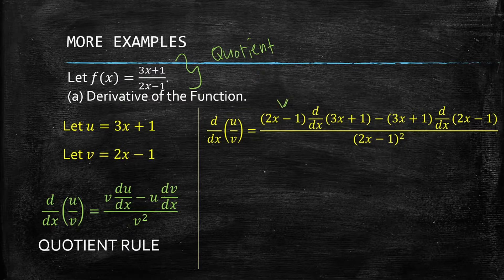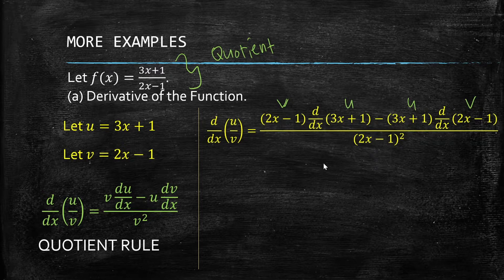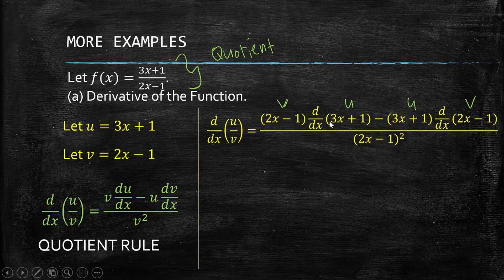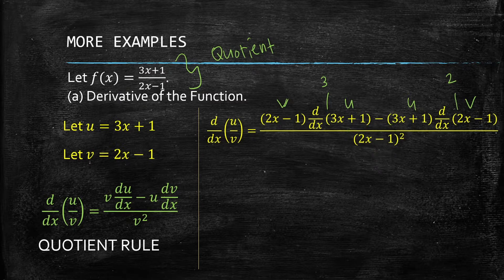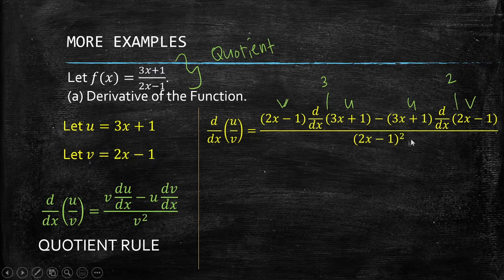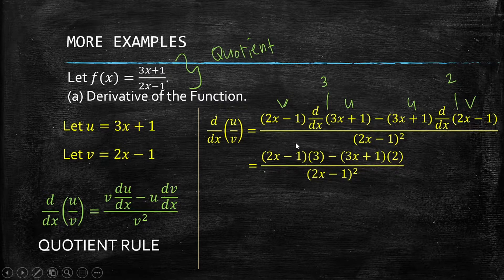Our v is 2x - 1 and u is 3x + 1. We simply substitute: we have (2x - 1) times the derivative of (3x + 1), minus (3x + 1) times the derivative of (2x - 1). The derivative of 3x + 1 is just 3, and the derivative of 2x - 1 is just 2. Do not forget v squared — most often this is where people make mistakes — which is (2x - 1) squared.